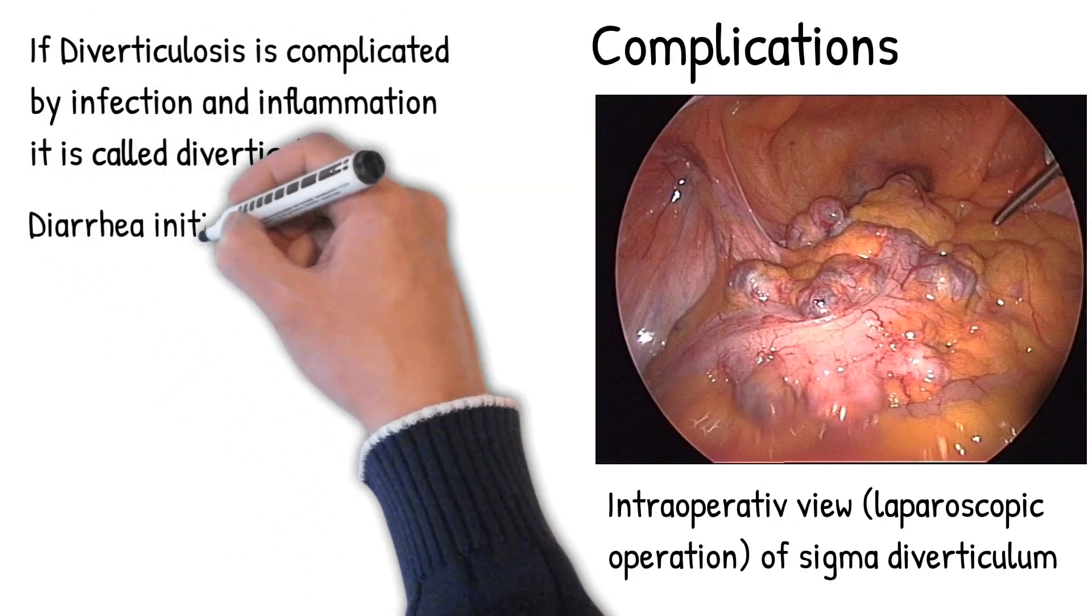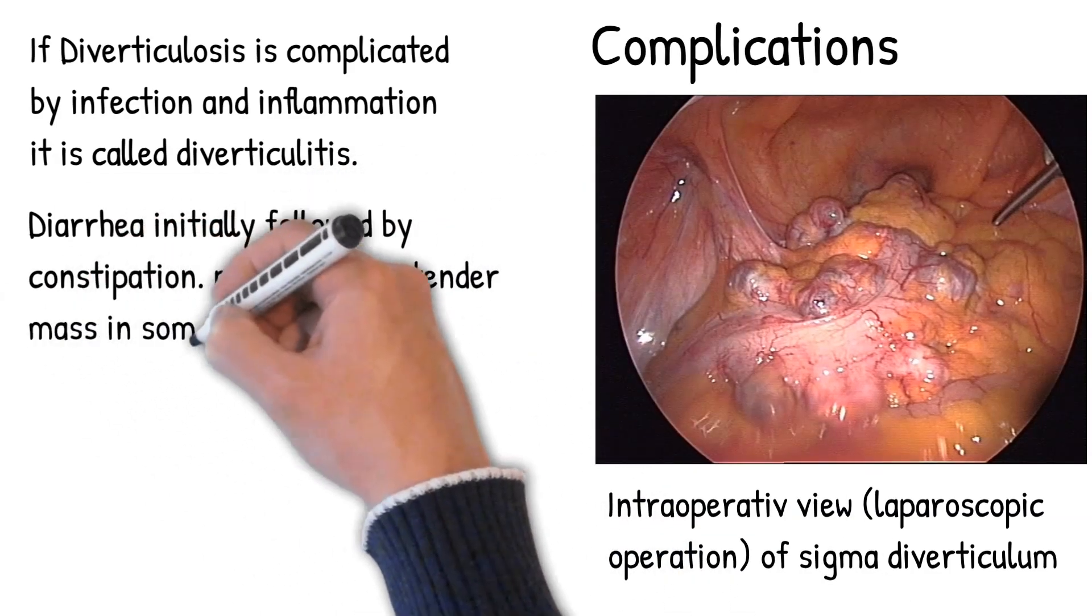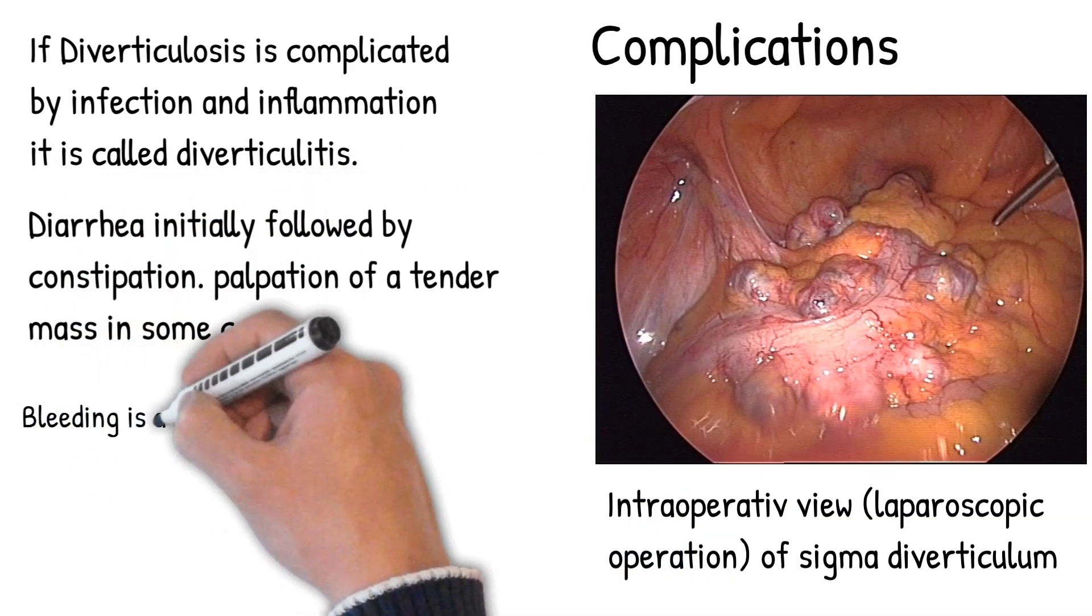Diarrhea initially followed by constipation. Palpation of a tender mass in some cases. Microscopic bleeding is common, gross bleeding is uncommon.